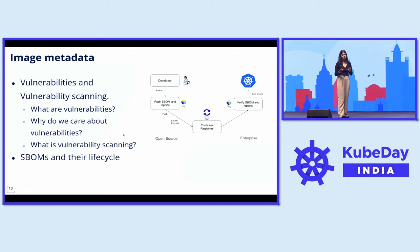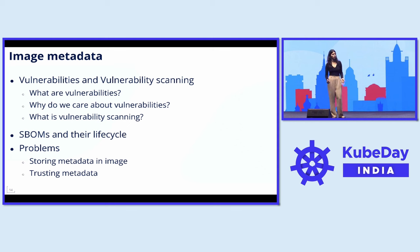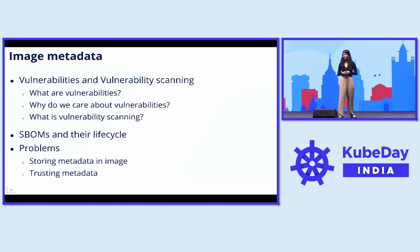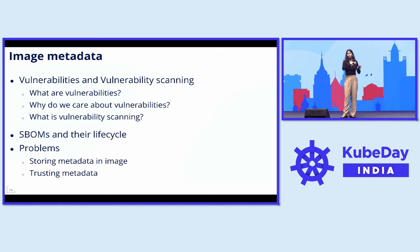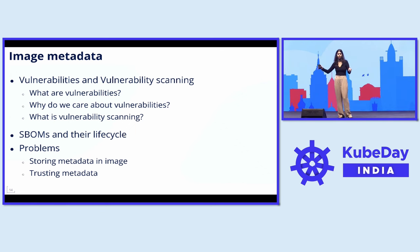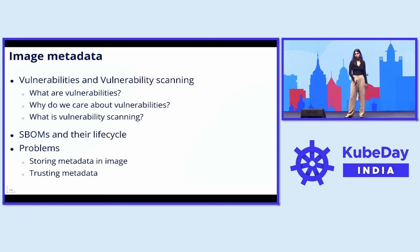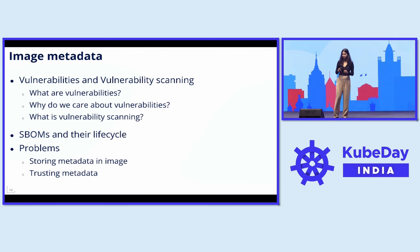There are problems that need to be addressed when you introduce metadata like SBOMs and reports. First, how do you store this metadata when your image is immutable? This was covered by the referrers API, where you can have an SBOM point to the image it belongs to. The next problem is: how do I trust the metadata? Any Tom, Dick, and Harry could have some artifact pointing to my image. How do I know that this is trustworthy information?